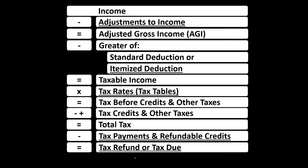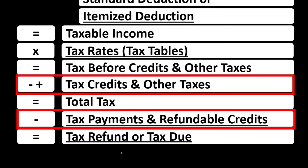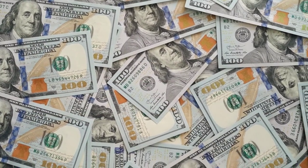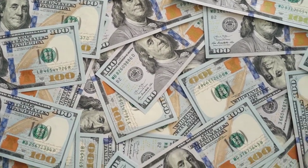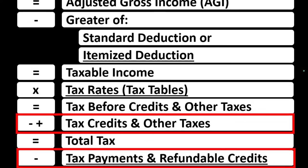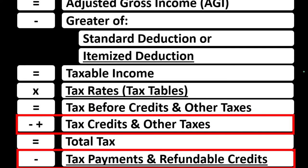Looking at the income tax formula, we're in the credit section. Both deductions and credits are good, but if you had a dollar of credit and a dollar of deduction, the credit would typically be better because you usually get the full dollar amount of the credit, whereas a dollar deduction only decreases taxable income and then the tax imposed on it.